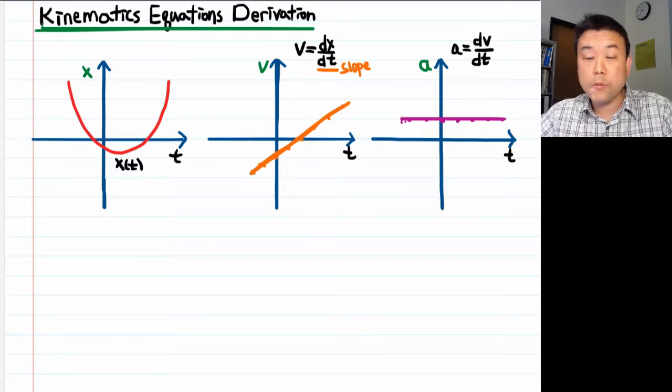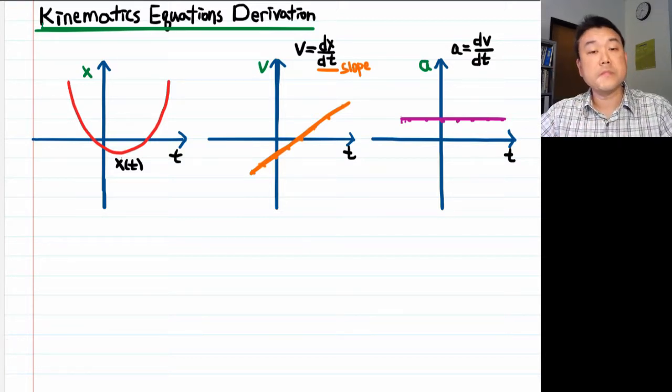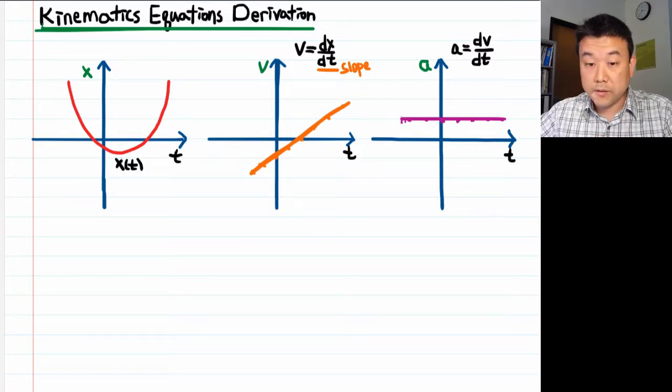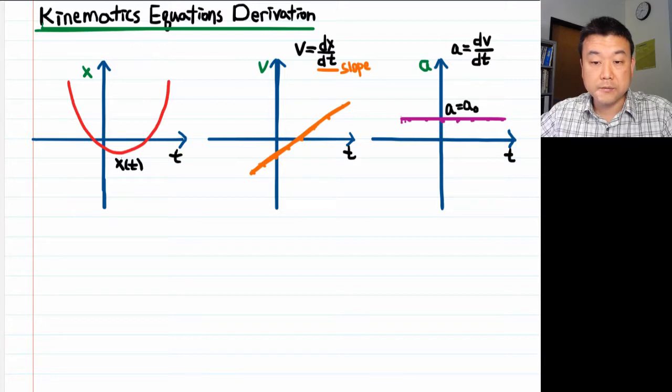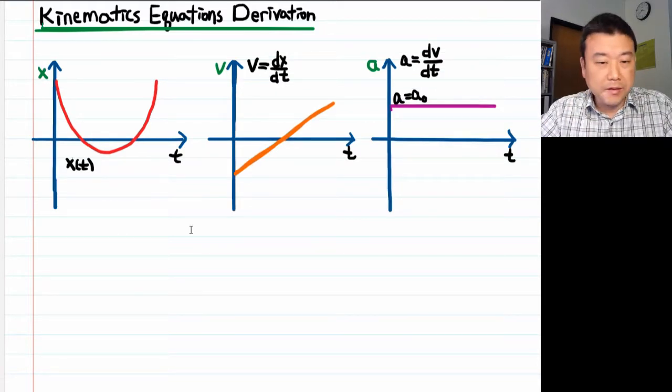And now what I want to do is go the other way, backward. Starting from acceleration, I want to work out what is the velocity and what is the position. So instead of an ending point here, our starting point is going to be this, that the acceleration is at some constant value, a₀. Let me move these axes around a little bit so that I can plot more easily going the other way. This is a little bit better.